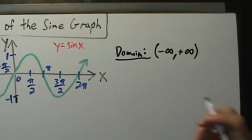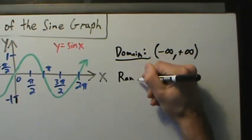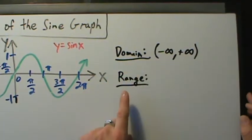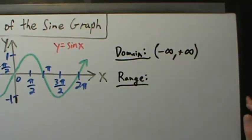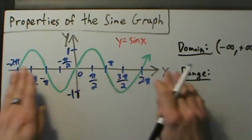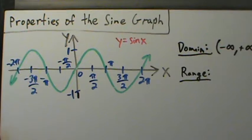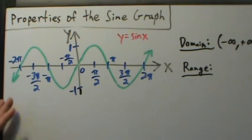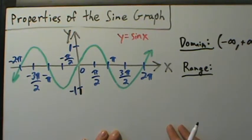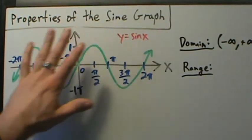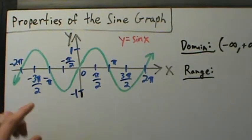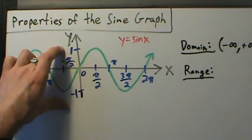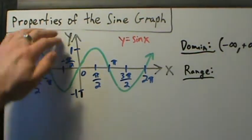Now the range. Just like the domain is the set of all input values, the range is the set of all output values — all the y coordinates. So what are all the y coordinates we get from this function? Range is sometimes a little harder to determine, but for sine it's not too bad. We look at the smallest y value, negative one, and the largest y value, positive one. Nothing outside of there — and what about in between? We get every y coordinate in between.